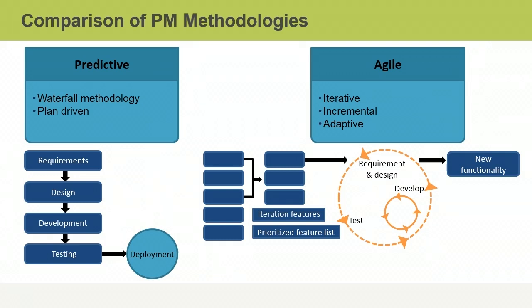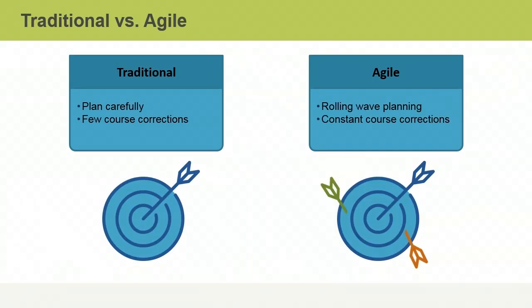The adaptive approach requires a high degree of customer involvement and is used for projects in which scope frequently changes. When you think about the differences between traditional and Agile methodologies, think about trying to hit a target. The bullseye of the target is a product that perfectly meets requirements and satisfies the customer. In traditional project management, we take very careful aim, spending much time and care in planning before we release the arrow. If we miss the target, there may be some disappointment and we will revisit our plan to see what went wrong.